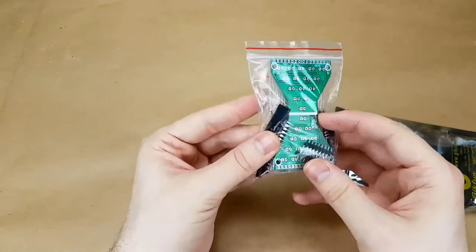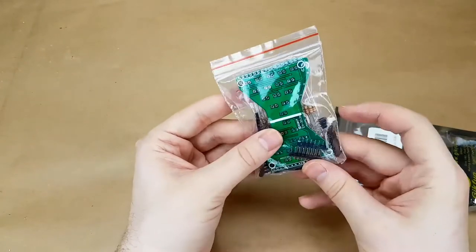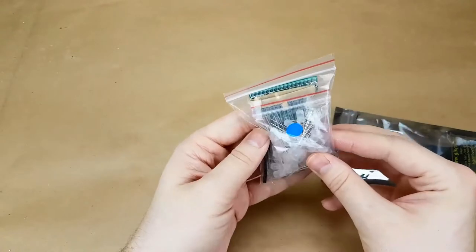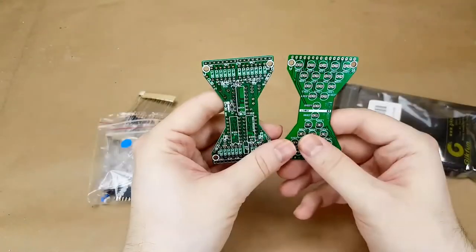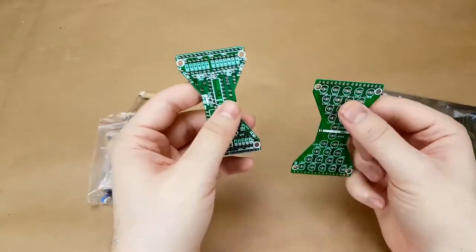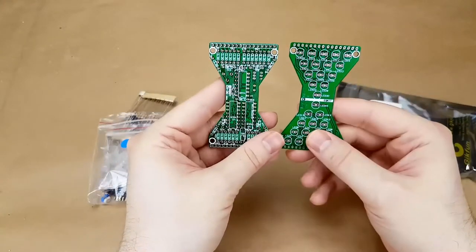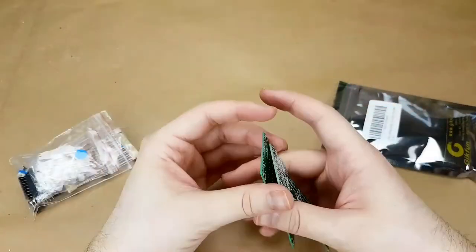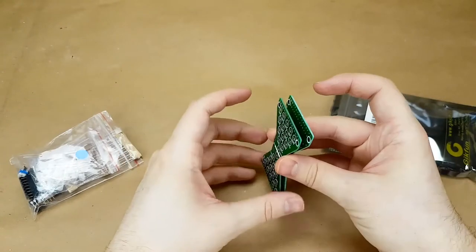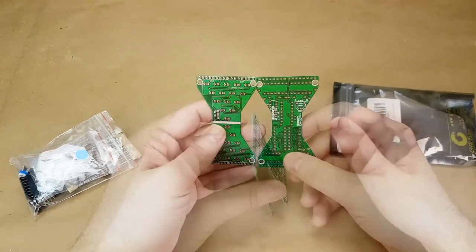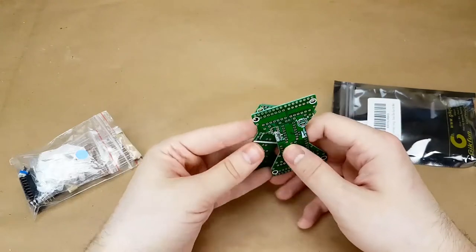However, this one has a couple chips on it. Lots of resistors. Lots of LEDs. A weird little LED board. It doesn't come with any instructions. I assume these two boards snap together so that it can stand upright. We'll assemble it and see how it works.